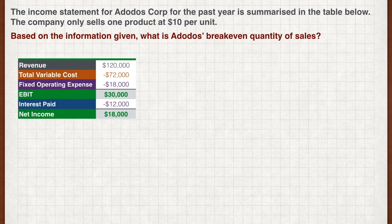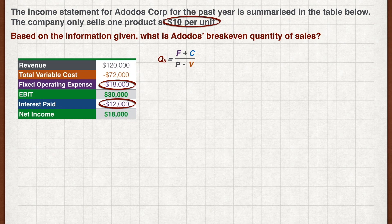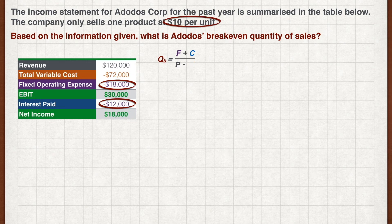And we're back. Let's first recall the formula for break-even quantity. We know the fixed operating costs, the fixed financing costs and the price per unit, so the only thing we need to calculate is the variable cost per unit.